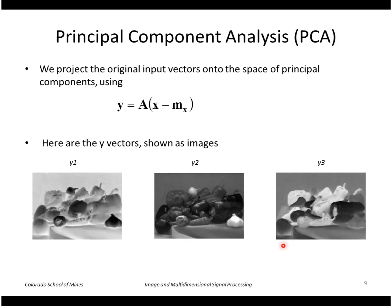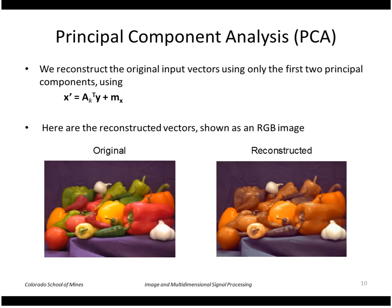Displaying those y vectors as images is shown here. We can also approximate the original vectors by using only a subset of the principal components. Here I've discarded the smallest principal component — the one corresponding to the smallest eigenvalue — and reconstruct the original vectors using only the top two principal components. The resulting RGB values are displayed as an image. This is the original image and this is the reconstructed image; some values are pretty close, but others, for example the green, are not very accurate.